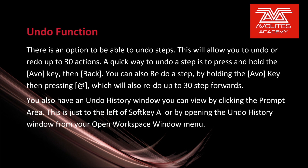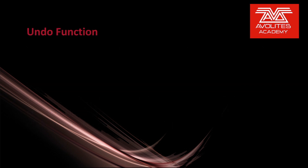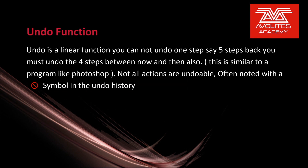You also have an undo history window, which you can view by pressing the prompt area. This is just to the left with soft key A, or by opening the undo history window from your open Workspace Windows menu. Undo is a linear function. You cannot undo one step, say five steps back. You must undo the four steps in between now and then also. This is similar to a program like Photoshop. Not all actions are undoable. These are often noted with a circle slash symbol in the undo history window.